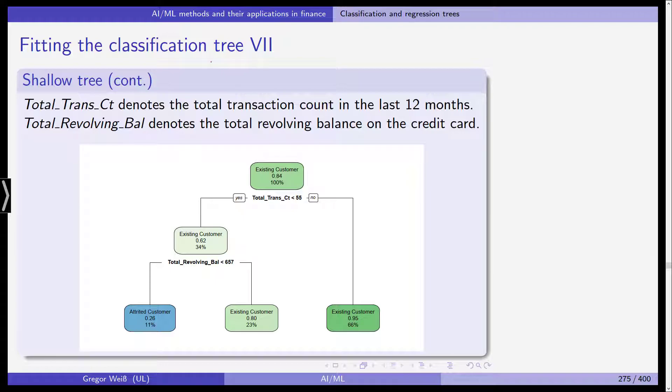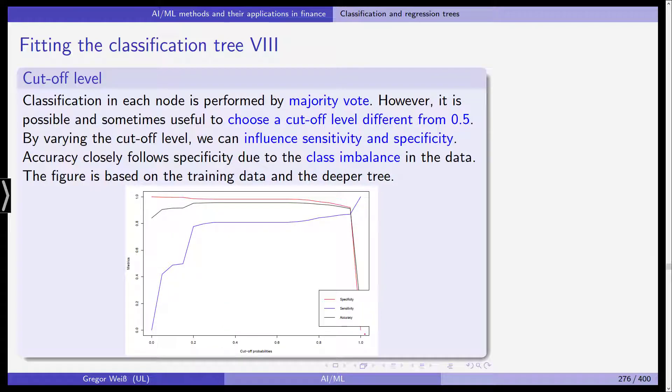That's the whole tree. We have the customer. If this total transaction count is smaller than 55, yes or no, we get a prediction here. We have a attrited customer, existing customer, existing customer. This is the whole tree, quite shallow. That's because we increase the complexity parameter.